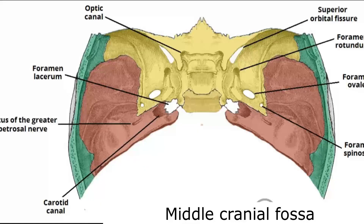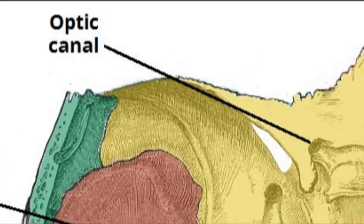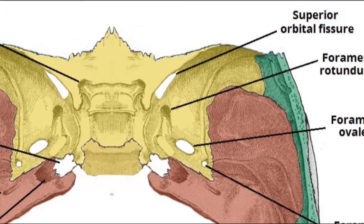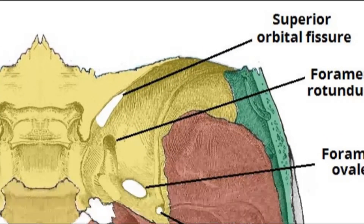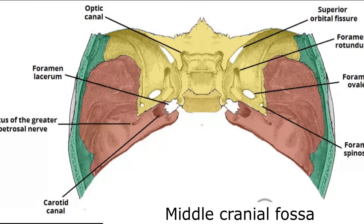Starting with the letters: O is for optic canal, through which passes the optic nerve and the ophthalmic artery. S is for superior orbital fissure, through which pass cranial nerves three, four, six, and the first branch V1 of the trigeminal nerve, known as the ophthalmic nerve.